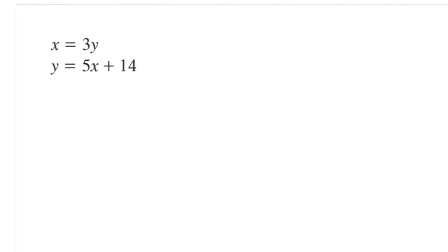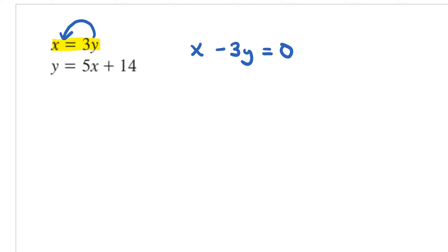Let's go ahead and work on some of the harder problems when we're solving linear systems. For this next problem, you'll notice that I have x equals 3y from my first equation, and it's not written in the proper order. So in order to fix that, I'll take this 3y and move it to the left-hand side. And if I do that, I get x minus 3y equals 0.